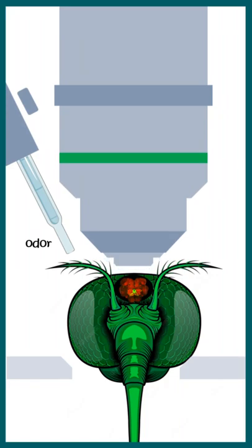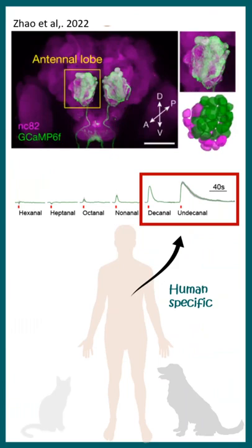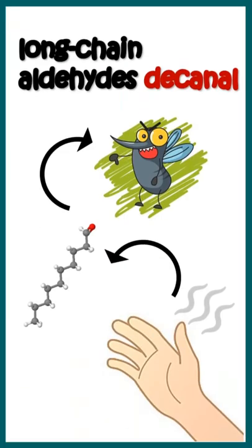They also put a puff of odor. They found out that two aldehydes present in humans only — and not in other species — such as decanal and undecanal can create the maximum response. That means mosquitoes can discriminate us versus other animals based on these aldehydes, which are selective to human skin.